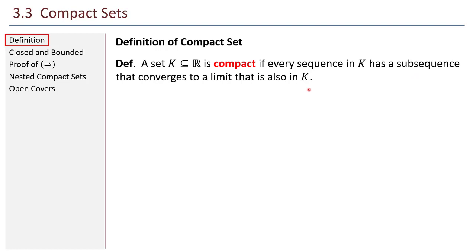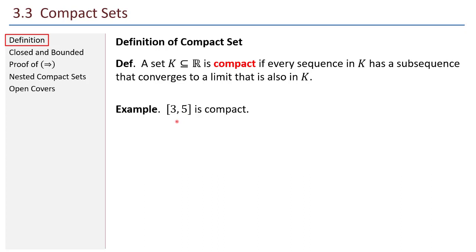It's a little bit like a closed set in the idea that there are sequences that converge to points that are already in the set — in a sense, it contains its limit points. Here's an example: the interval from 3 to 5 that includes the endpoints, all real numbers from 3 to 5 inclusive. That is a compact set, and let's see why.